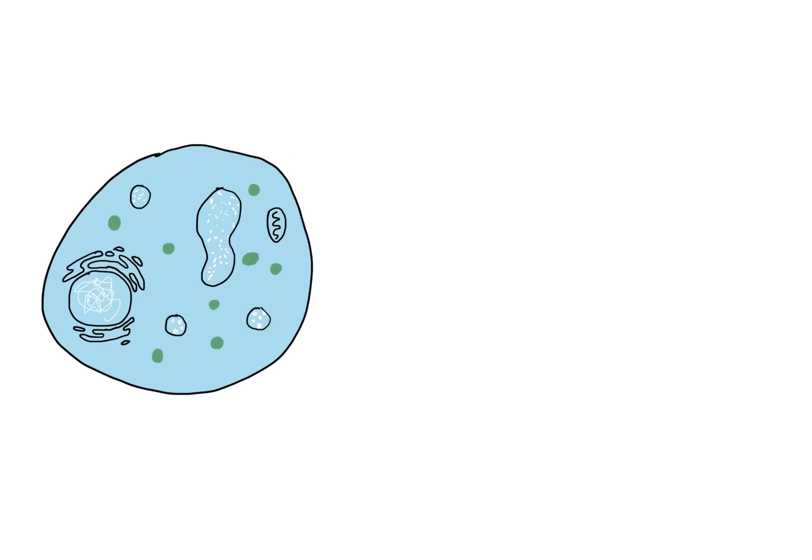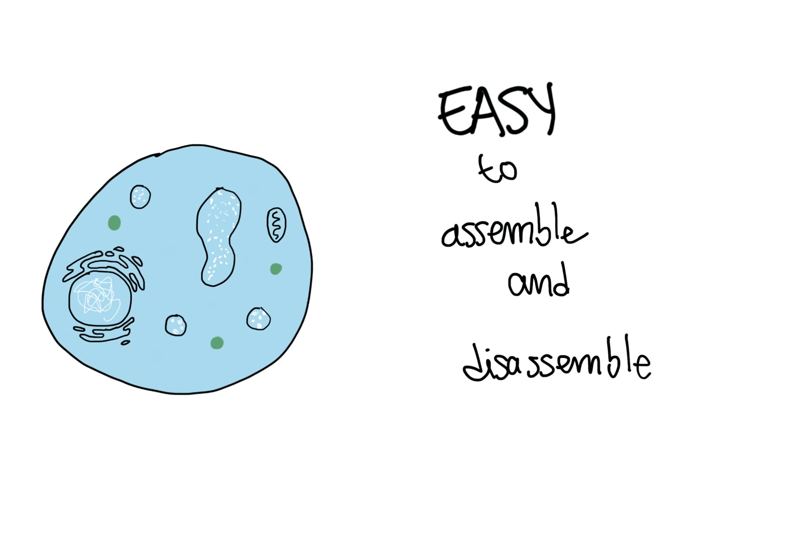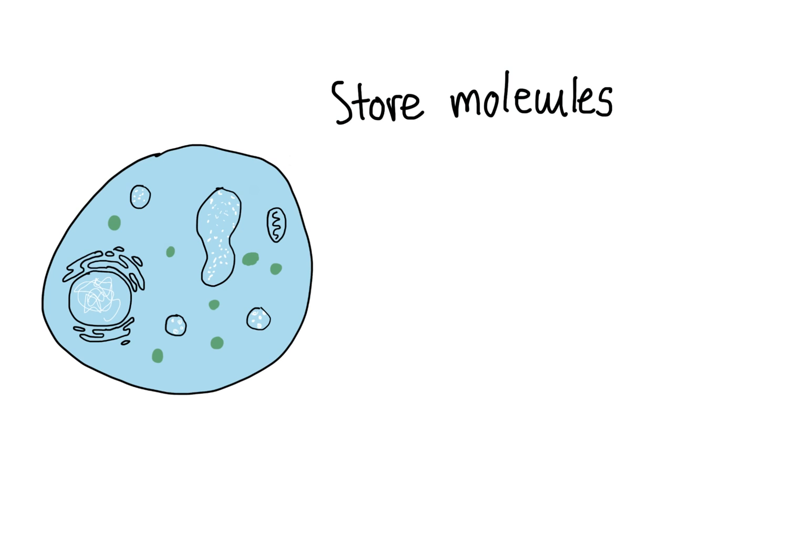Crucially, cells take advantage of these liquid-like properties. Molecules can be exchanged quickly across the barrier-free surface of the condensate. Conveniently, these liquid compartments are easy to assemble and disassemble so the cell can rapidly store molecules in them.